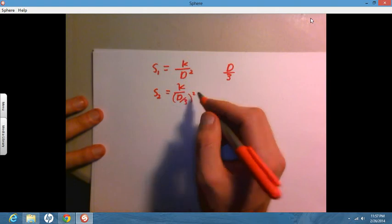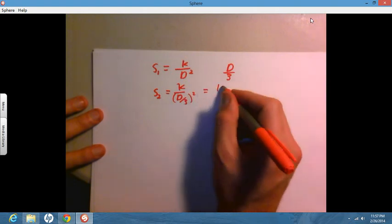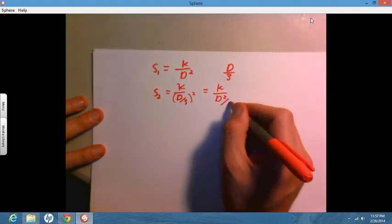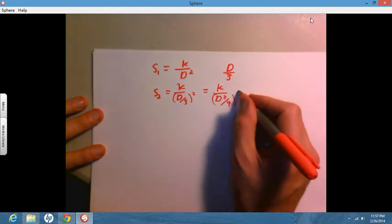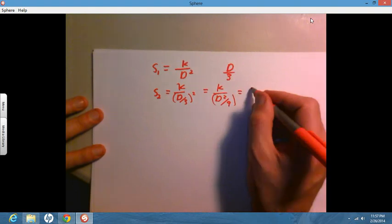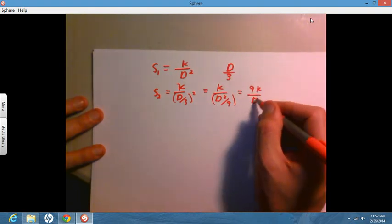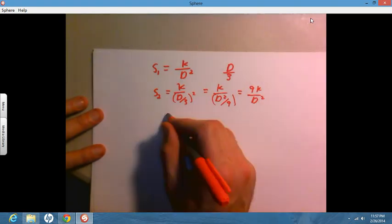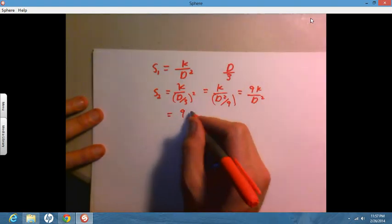Well, this is K divided by D squared over nine, which is the same as 9K over D squared, which equals nine times K over D squared.